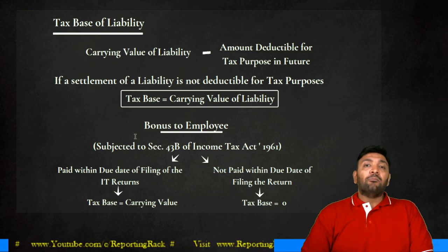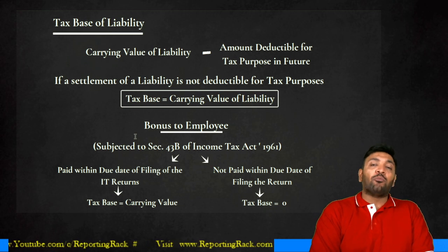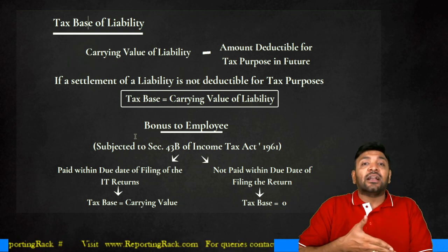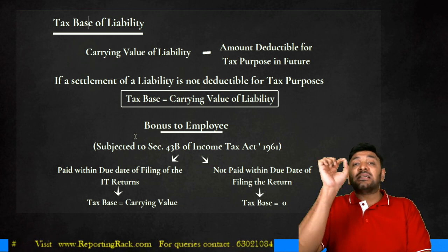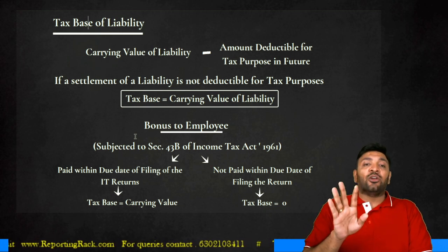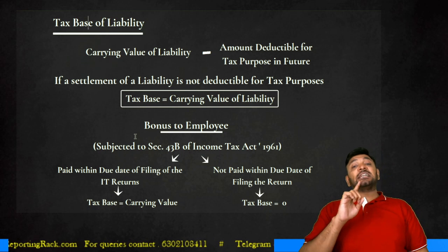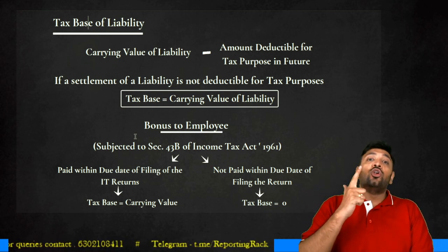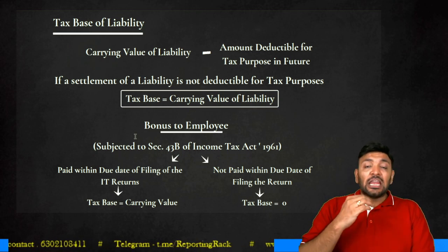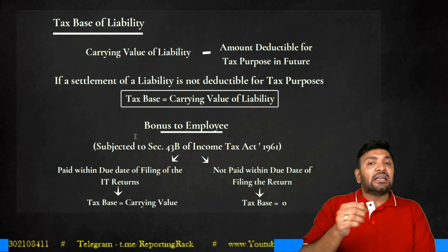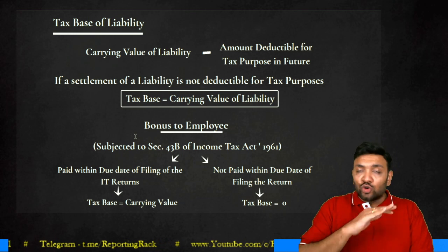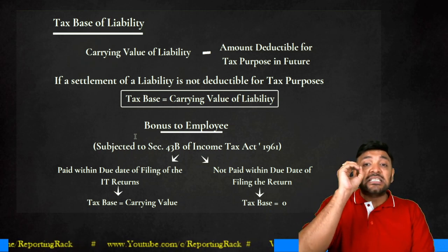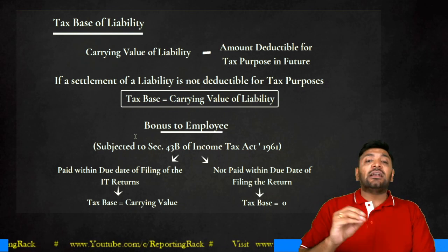What if the bonus is paid before the due date of filing? Then the entire deduction is allowed in the current period; nothing is deductible in future. So: carrying value of bonus minus zero = tax base equals carrying value. Temporary difference is zero. Remember: if settlement of a liability is not deductible for tax purposes — repaying a loan, paying creditors, paying bank overdraft — no tax deduction. In all such cases, tax base equals carrying value of liability, and temporary differences are zero.